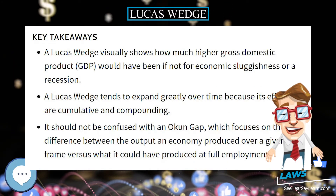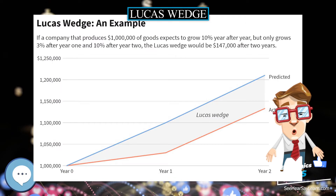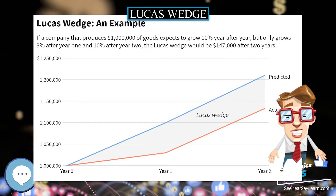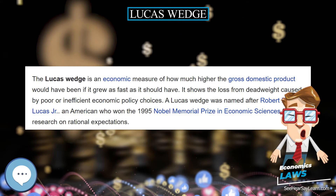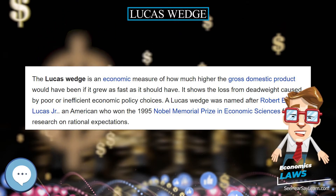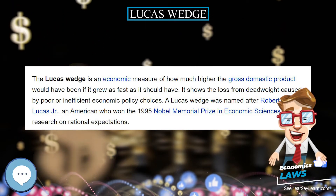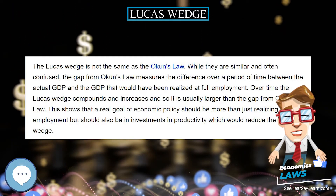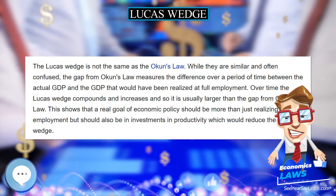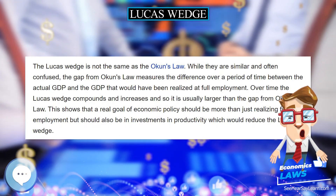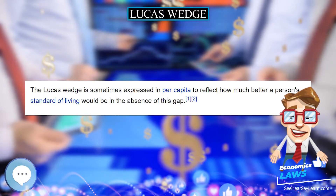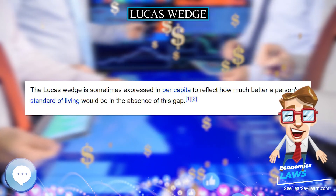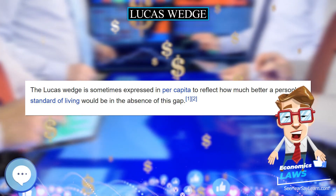The Lucas wedge is not the same as Okun's law. While they are similar and often confused, the gap from Okun's law measures the difference over a period of time between the actual GDP and the GDP that would have been realized at full employment. Over time, the Lucas wedge compounds and increases, and so it is usually larger than the gap from Okun's law.